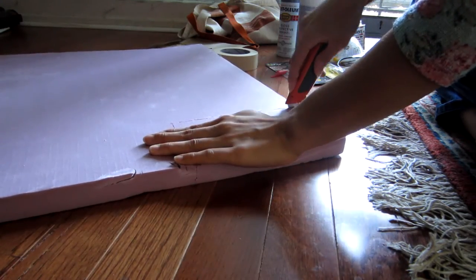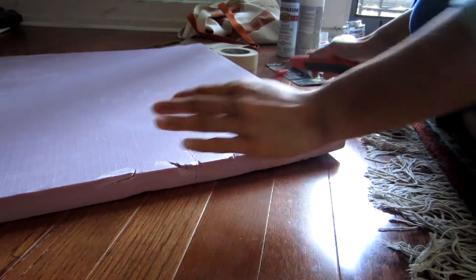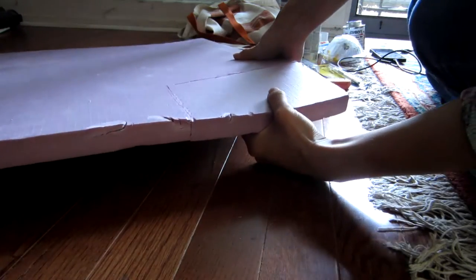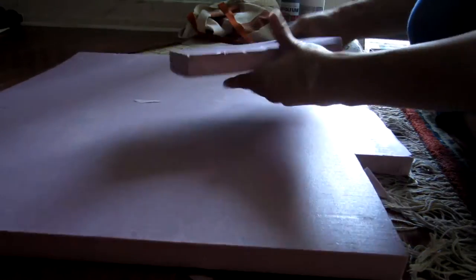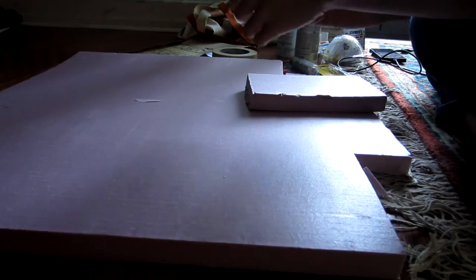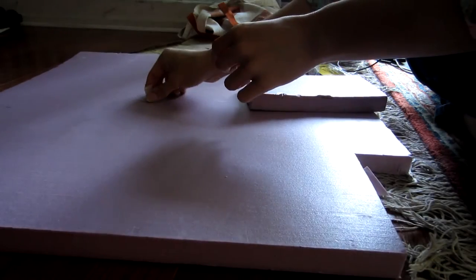For this type of foam you're going to want to take an exacto knife, preferably one of the bigger ones, not the smaller ones just yet. And you're going to want to cut through all the way and make sure you can cut out a decent sized rectangular piece.